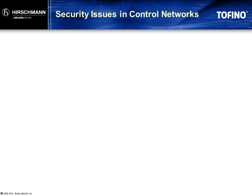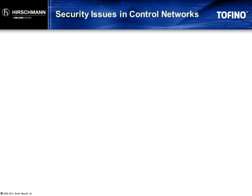Most cybersecurity issues fall into three major categories. First, control networks are full of what we would call soft targets — devices that are extremely vulnerable to disruption through their network interface. The PCs in many plants run for weeks or months without any security updates, and some even operate without any antivirus tools. In addition, many of the controllers in these networks were designed in an era when cybersecurity was not a concern. As a result, many of these devices can be disrupted by malformed network traffic or even by high volumes of correctly formed traffic.